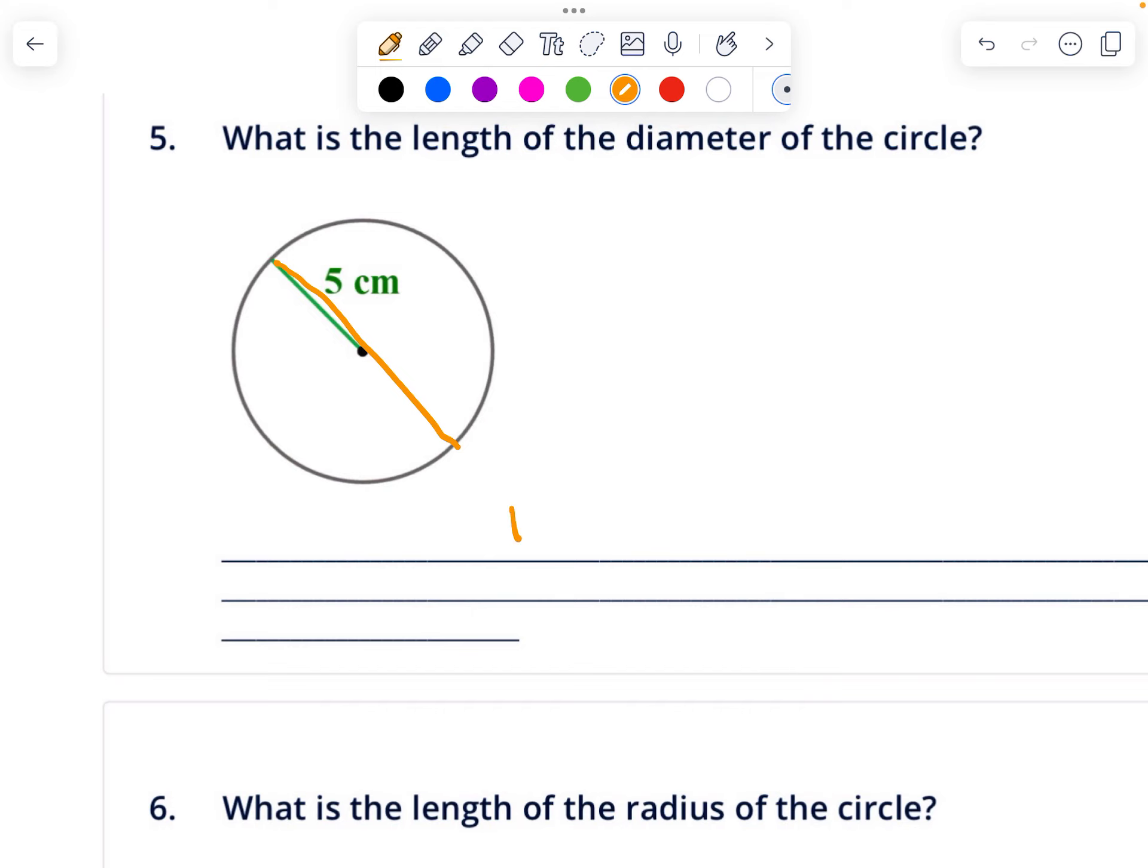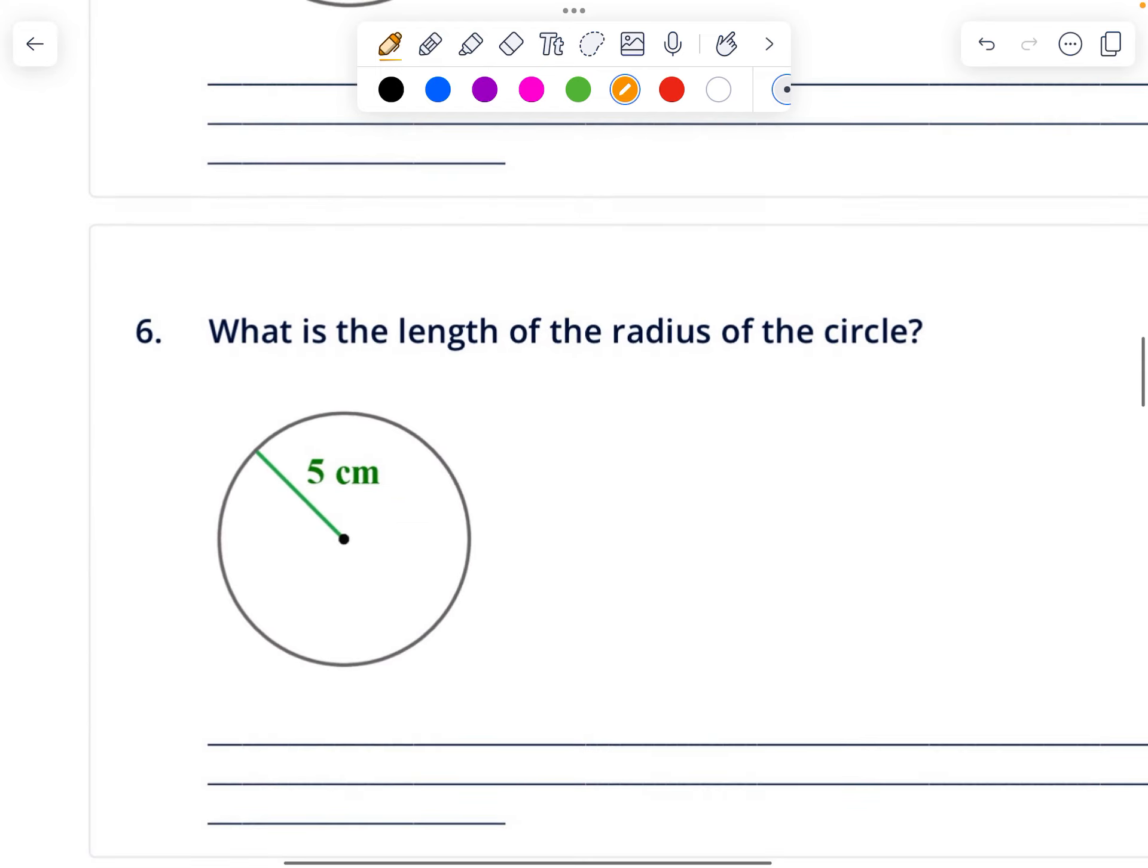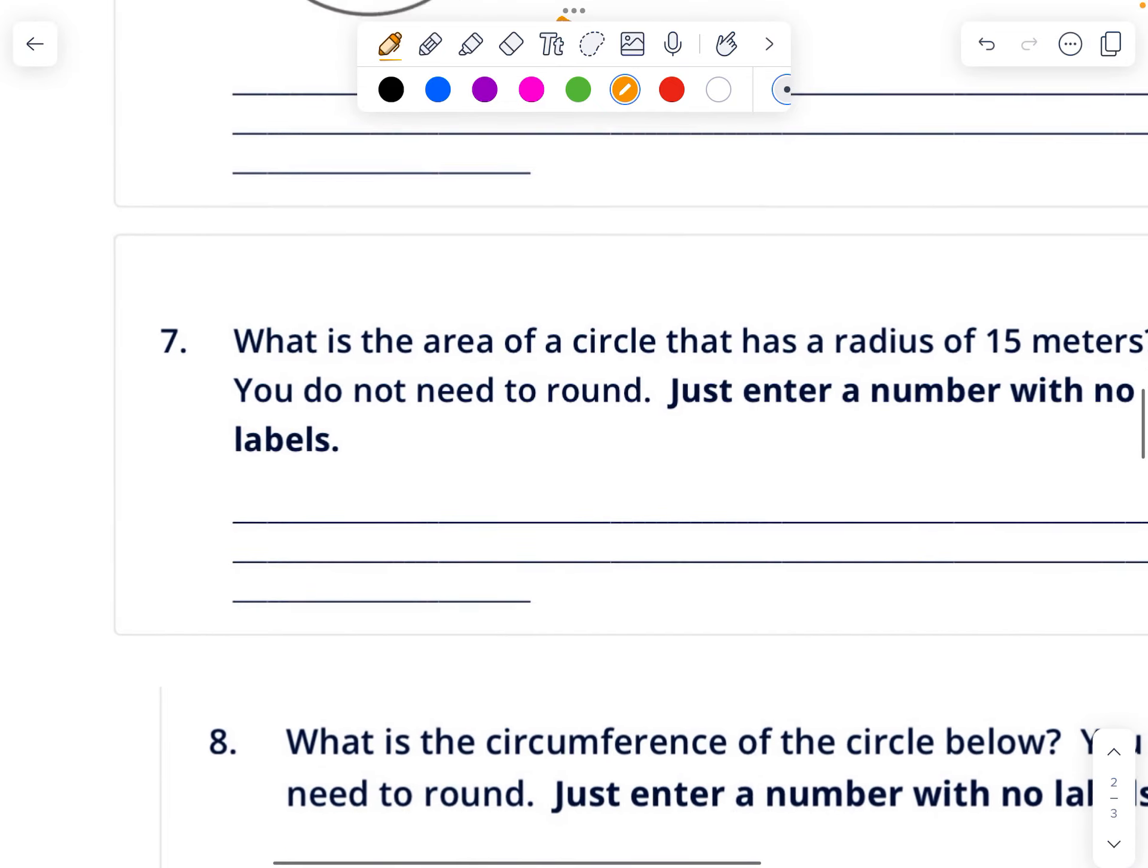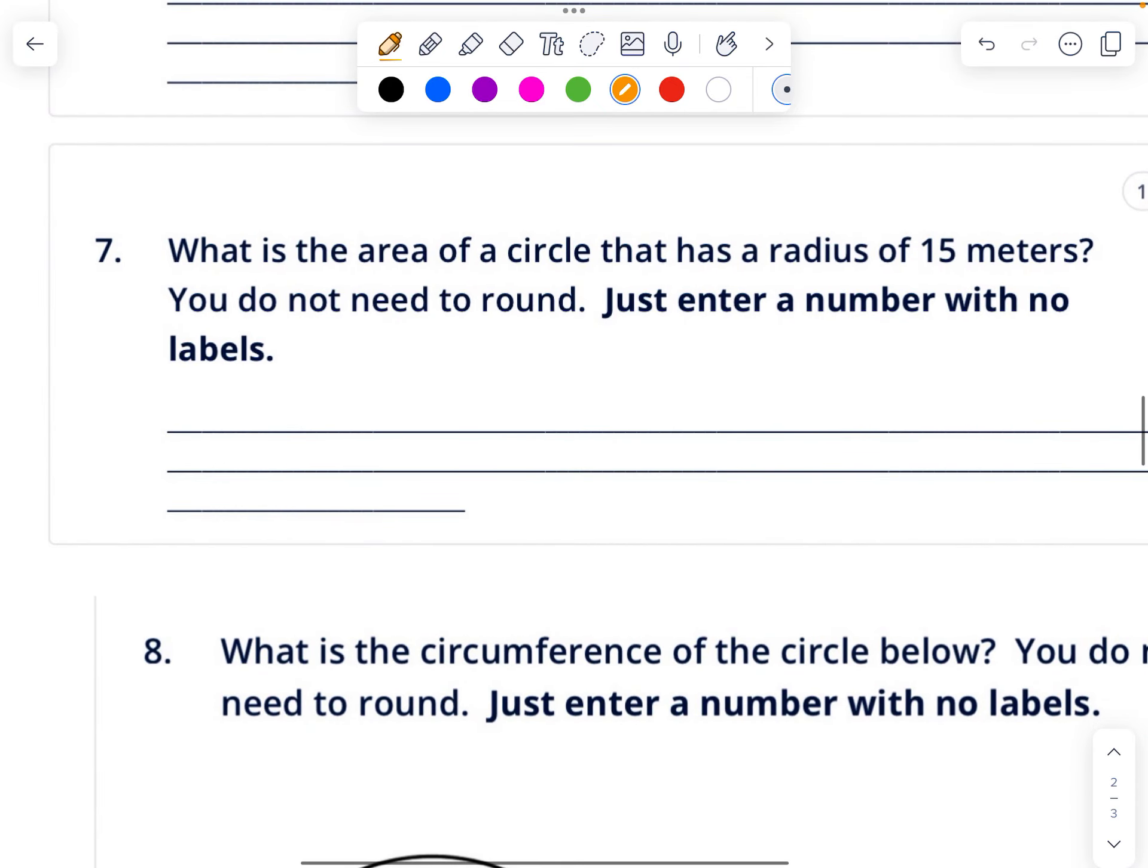What is the area of a circle that has a radius of 15? Remember that the formula for circle's area is pi r squared. So do 3.14 times 15 squared. In our calculator it's going to look like 3.14 times 15 times 15. That is going to be 706.5.